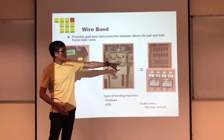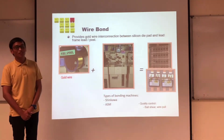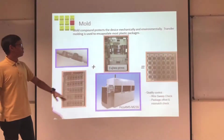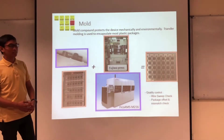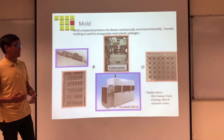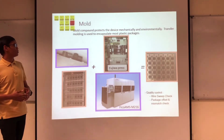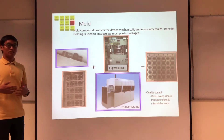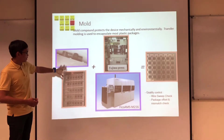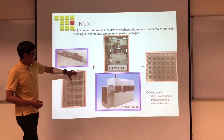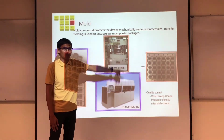This is the final result of wire bonding. Next is mold. Mold compound protects the device mechanically and environmentally. Transfer molding is used to encapsulate most plastic packages. This shows the material for the mold, the molding machine, and the final molded product.